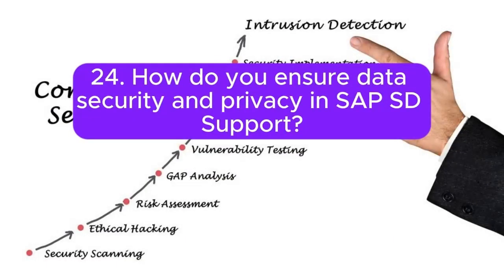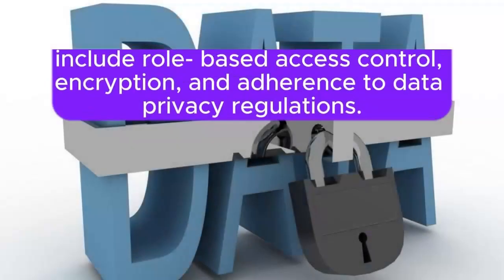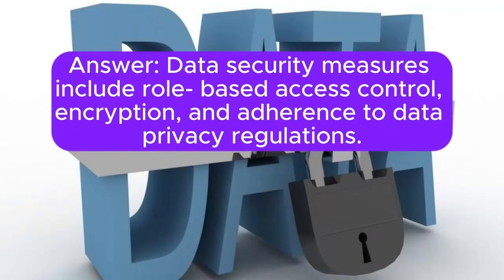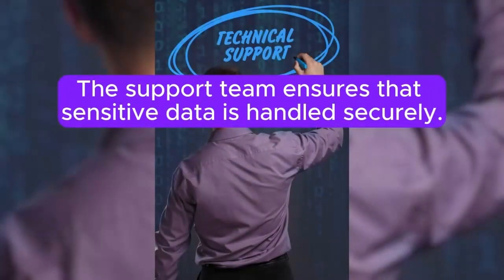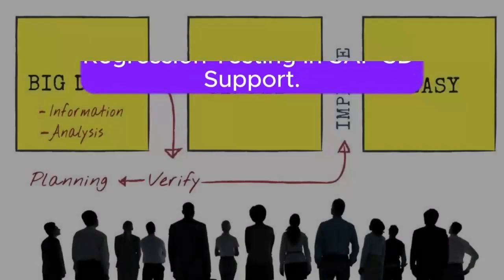Question 24: How do you ensure data security and privacy in SAP SD support? Answer: Data security measures include role-based access control, encryption, and adherence to data privacy regulations. The support team ensures that sensitive data is handled securely.